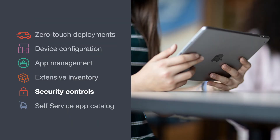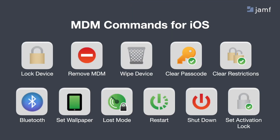Next, some security controls. On the iOS side, you have access to a number of remote commands — such as clearing the passcode, which is handy if a student has forgotten theirs; setting wallpaper; enabling Loss Mode, which is extremely handy in the scenario of a missing iOS device; restarting or shutting down a device; plus cellular commands like enable/disable voice roaming, enable/disable data roaming, enable/disable personal hotspots, and refresh cellular plans.